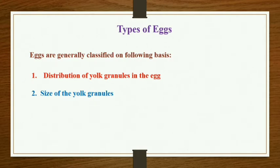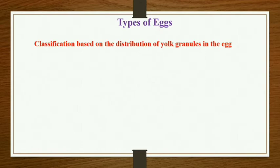Now let's focus on the first criteria, that is distribution of yolk granules in the egg. On this basis, based on where the yolk granules are localized or concentrated, the eggs are classified into four types.